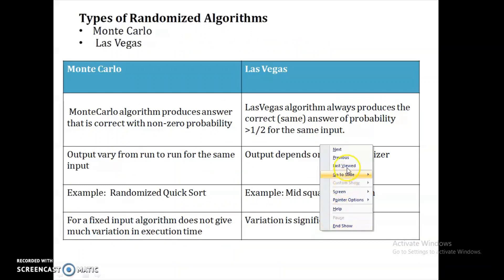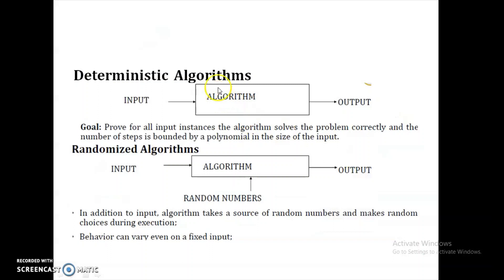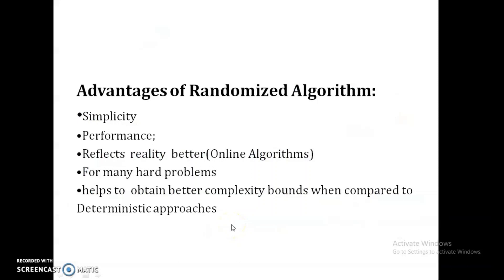Now let's see the difference between a deterministic algorithm and a randomized algorithm. In a deterministic algorithm, the output purely depends on the input. But in the case of a randomized algorithm, the output depends upon the random numbers generated using the random functions. The output may vary for the same input — it may generate different outputs at different times. The randomized algorithm has very good performance compared to the deterministic algorithm. It reflects reality better in online algorithms, is useful for many hard problems, and helps obtain better complexity bounds compared to the non-deterministic approach.